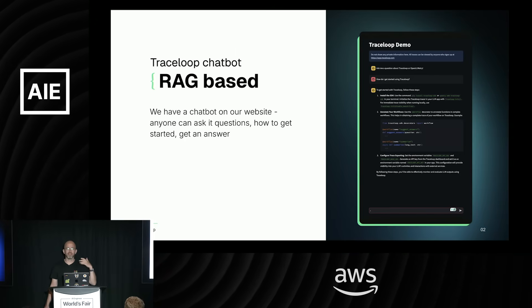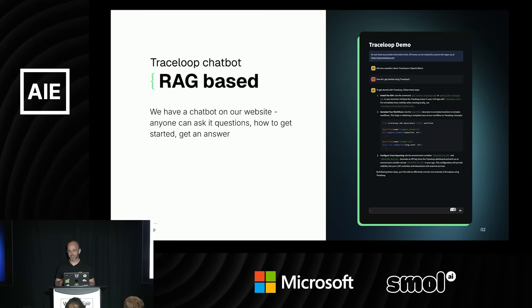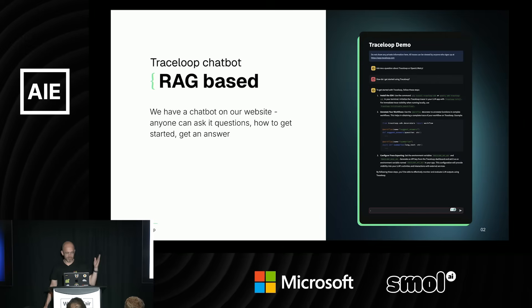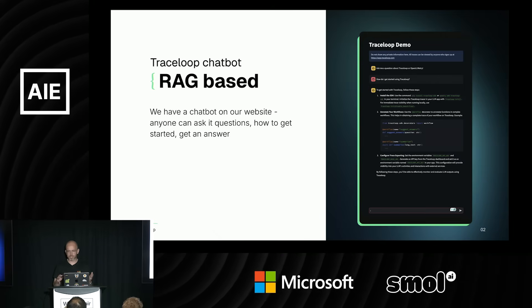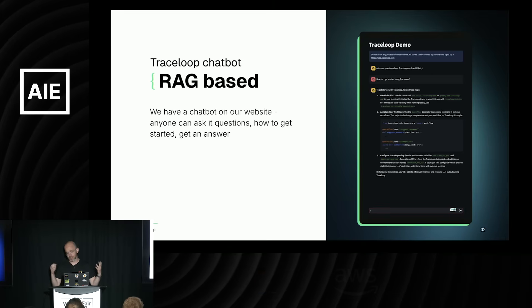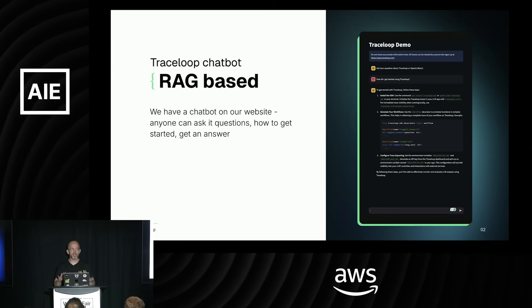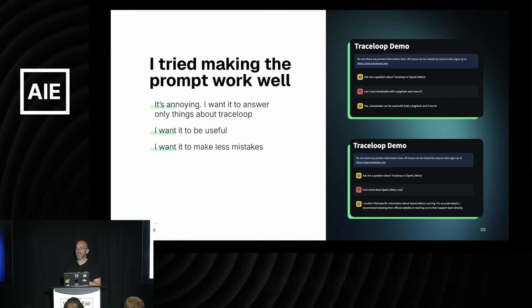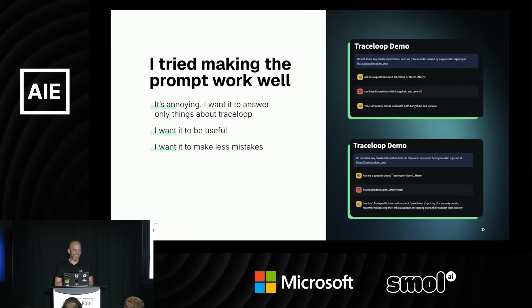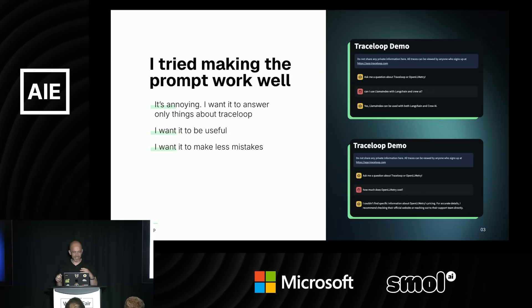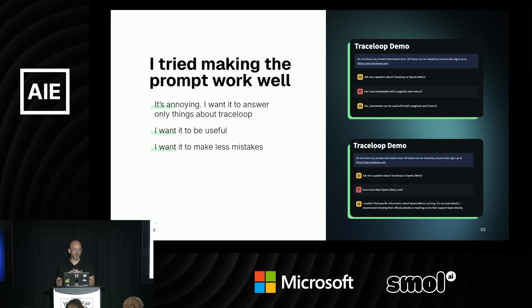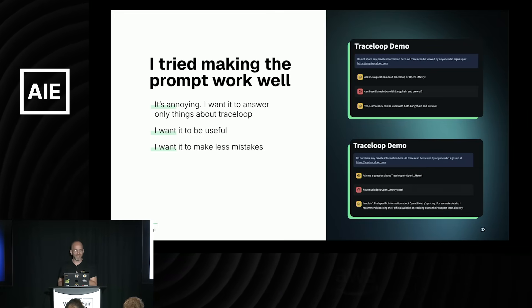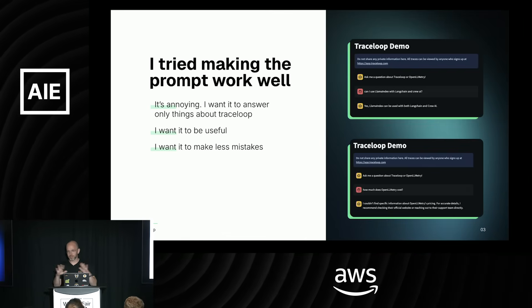I made it possible to make it significantly better without actually doing any prompt engineering, because it's not really engineering. We have a RAG-based chatbot in our application and website — super simple, it just allows you to ask questions about our documentation and gives you answers. The easiest RAG you can think of. When I deployed it the first time it worked kind of okay, and I tried to make it better. I needed it to only answer things related to Traceloop — my company — not things about the weather.